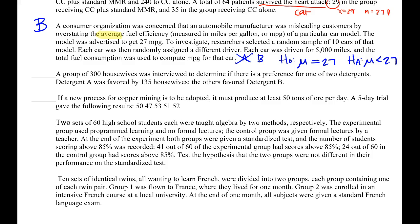A group of 300 housewives is interviewed to determine if there's a preference for one of two detergents. Detergent A was favored by some, the others favored detergent B. A lot of people are going to choose a two-sample test here, but we don't have two groups. We have one outcome — do you like A or do you like B? The two detergents are not groups; the housewives are the group. So we're dealing with a one-sample test with a categorical outcome — a one-proportion Z-test — testing whether the preference is 50-50.